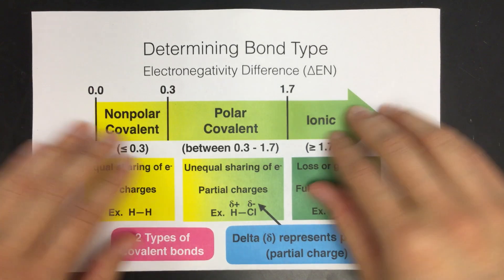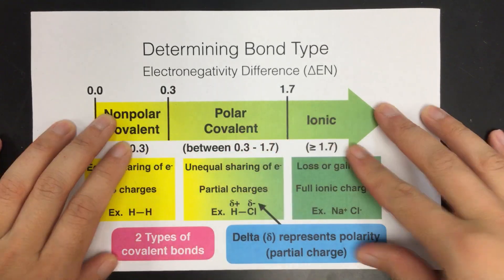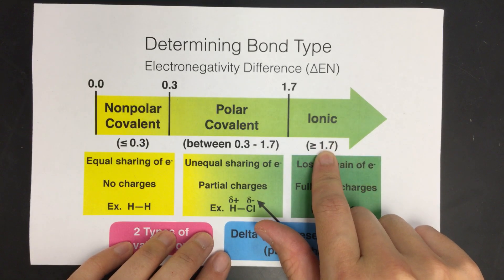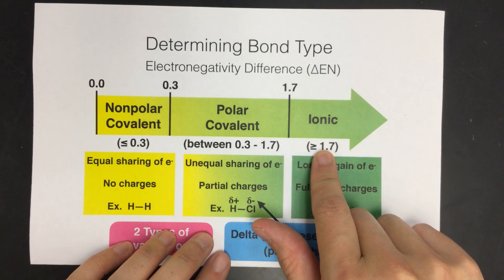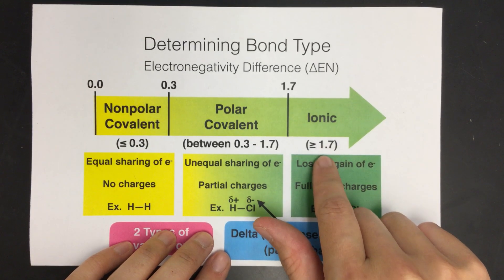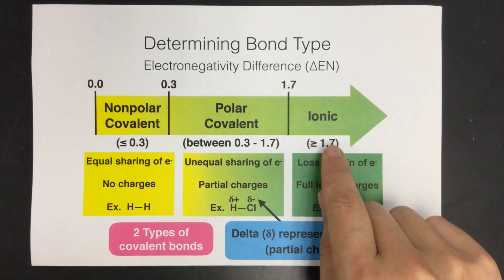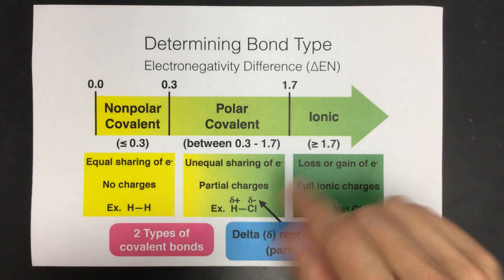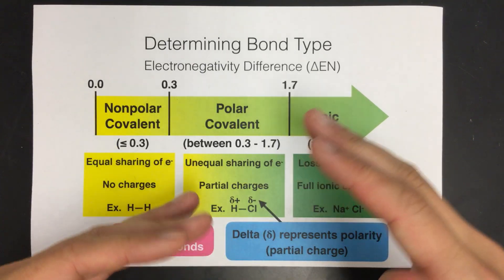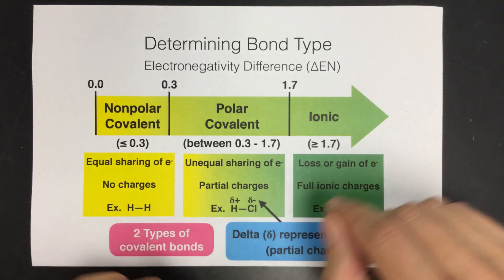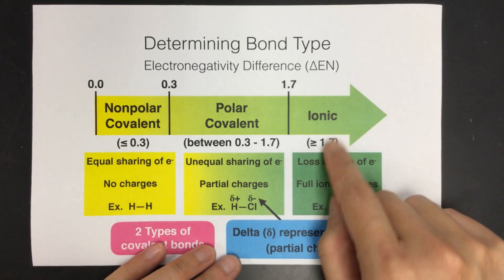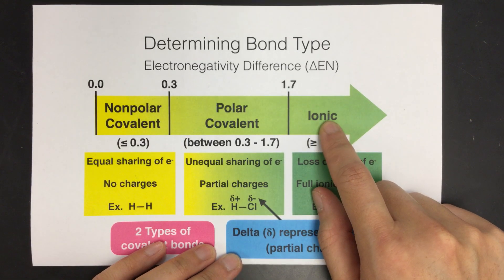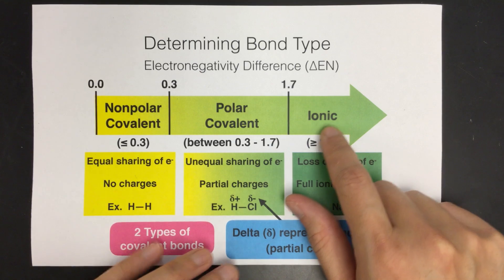Ionic bonds will occur if the difference in electronegativities is greater than or equal to 1.7. So if there's a big difference in their electronegativity, you're going to have ionic — one of them is just going to take the electrons.